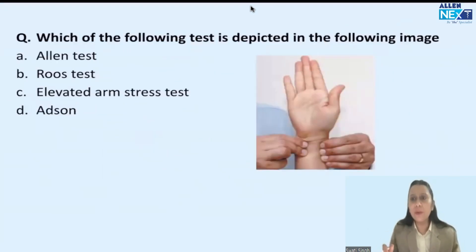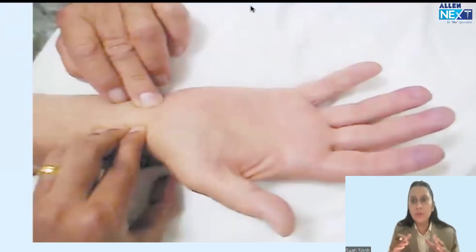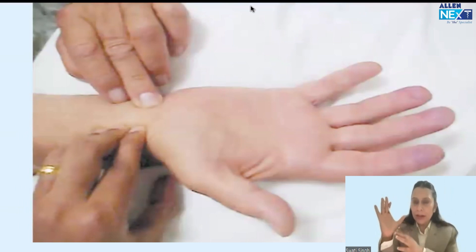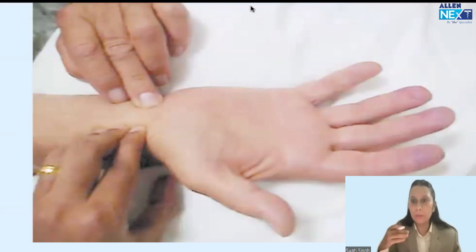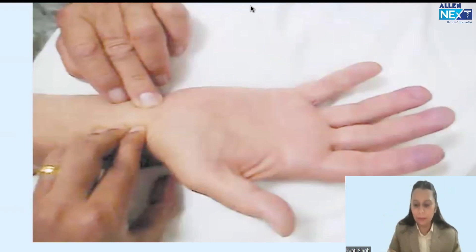Coming to the next question — it was an image-based question. This image I discussed in my chapter on monitoring when discussing invasive blood pressure monitoring or radial artery cannulation. The answer is Allen's test. Why do we do Allen's test? Our hand has two major arteries — radial artery and medial side ulnar artery — with a very good collateral system between the two. If there is a problem in one artery, perfusion of the hand is maintained by the collateral of the other artery.